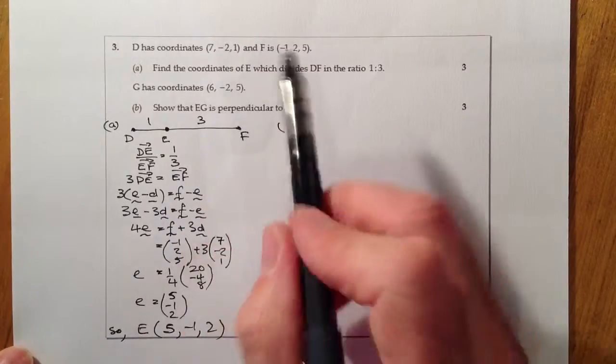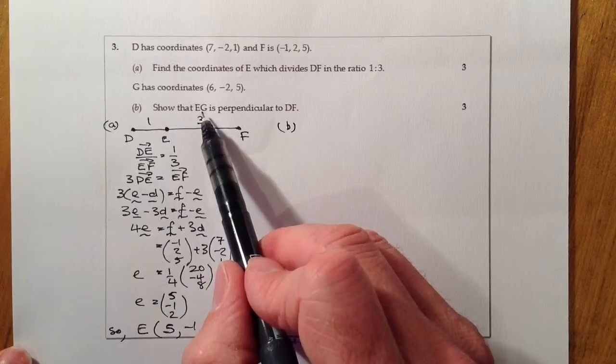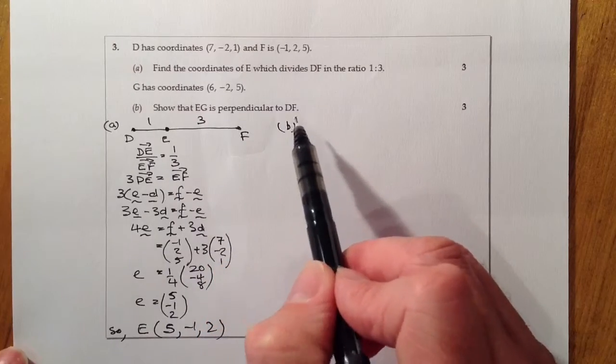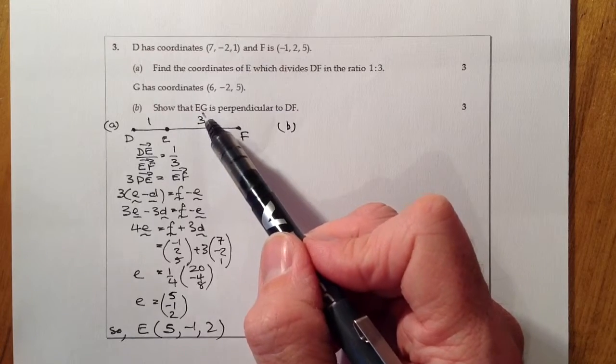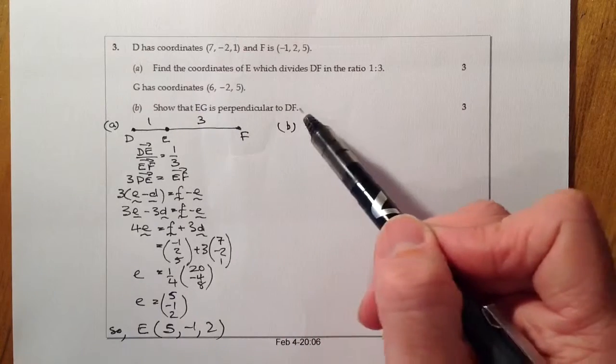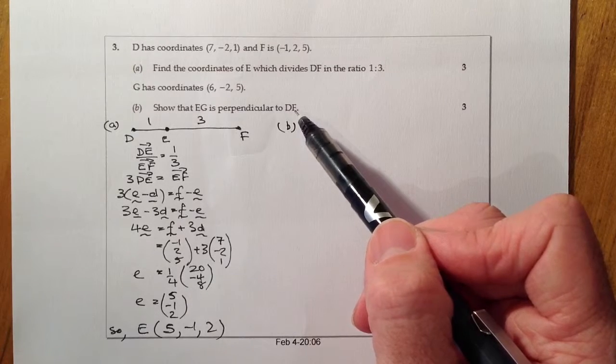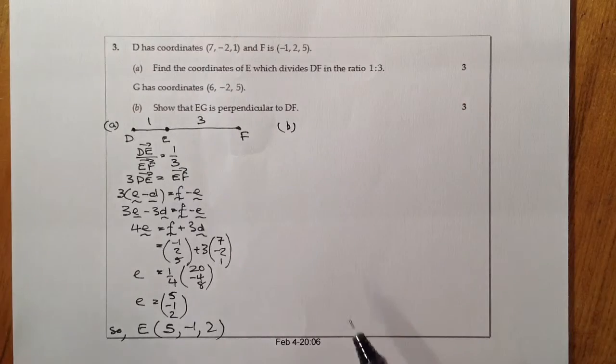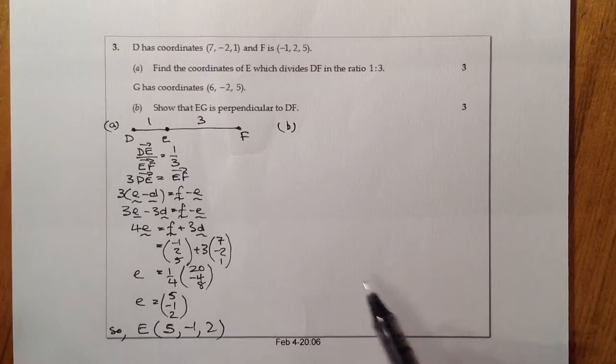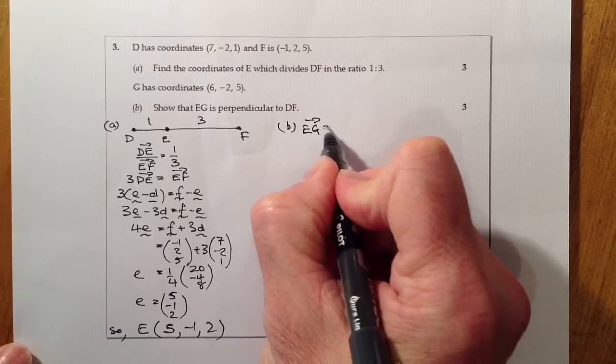Let's look at part (b). G has coordinates (6, -2, 5), show that EG is perpendicular to DF. For this question, I'll work out vector EG, work out vector DF, and then use the scalar product to show it equals zero. If it does, then EG is perpendicular to DF.